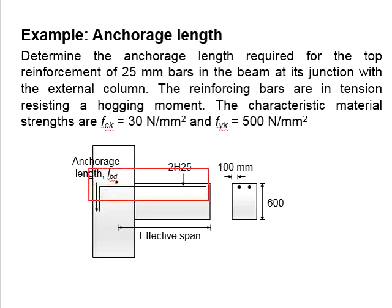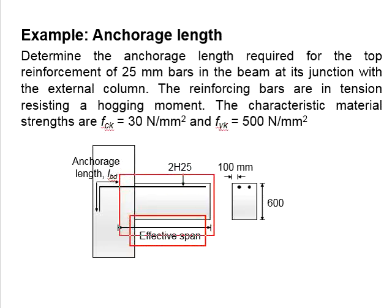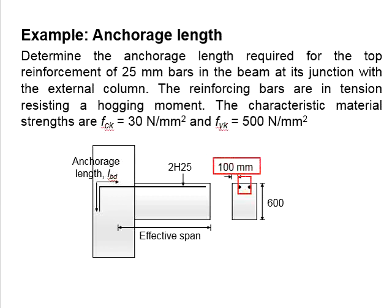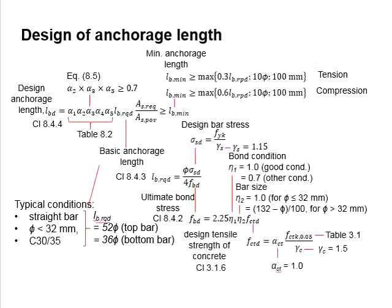The top reinforcement bar is undergoing tension. Assuming the effective span is as indicated, the anchorage length will be as per the indicator shown. 2H25 bars are used as the top reinforcement, placed at 100 mm offset from the side of the beam. The beam has a depth of 600 mm. To solve these questions, we need to refer to clause 8.4.4 to obtain the equations to determine the desired anchorage length.